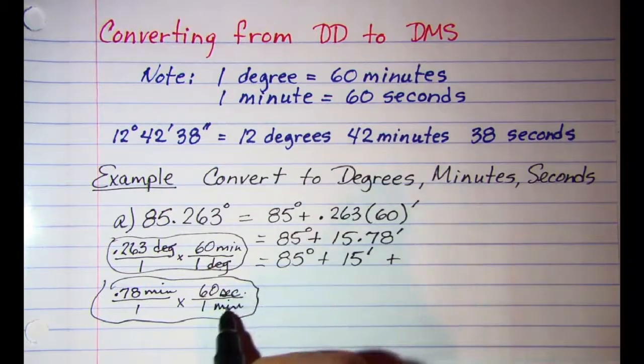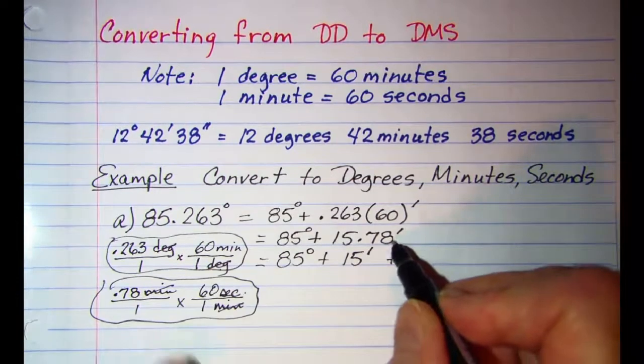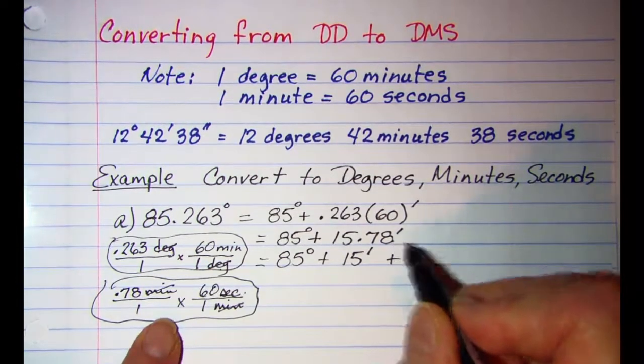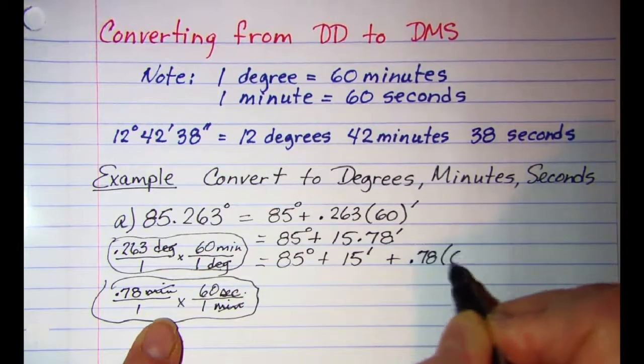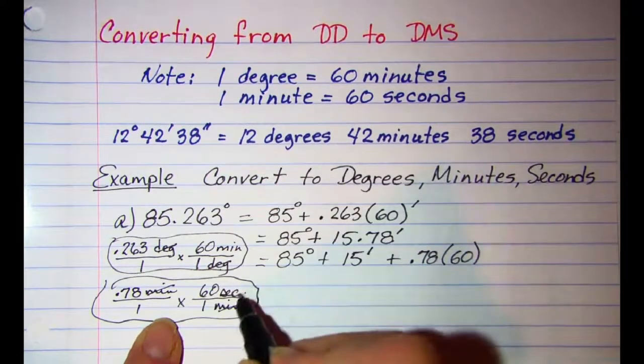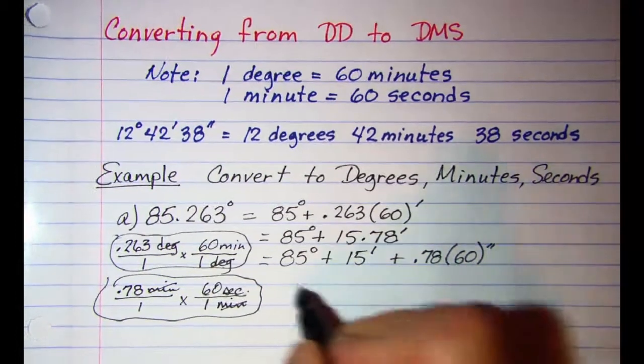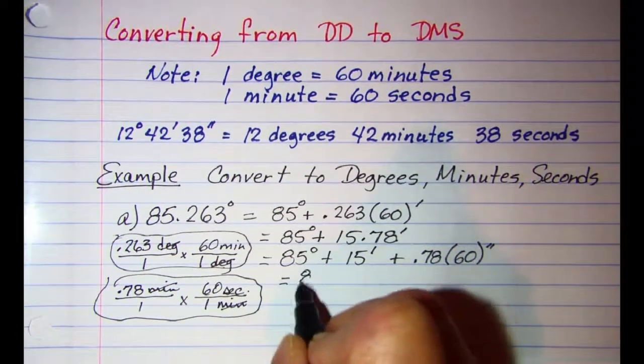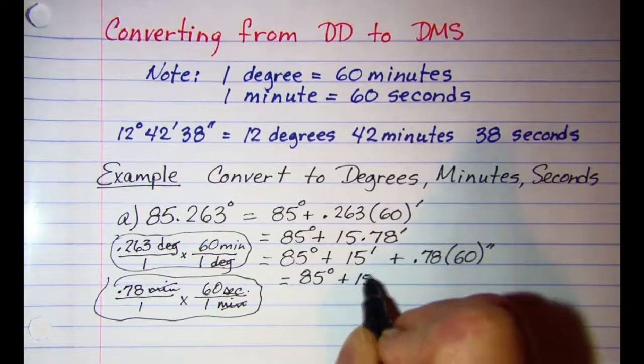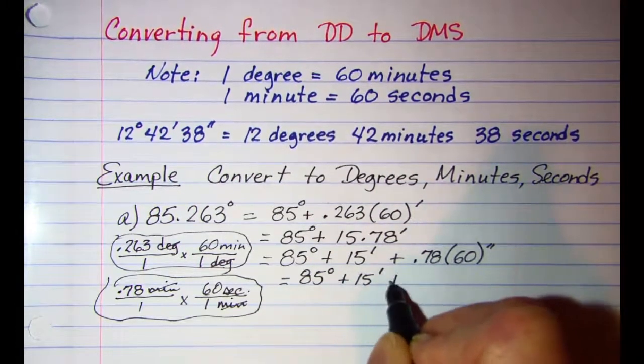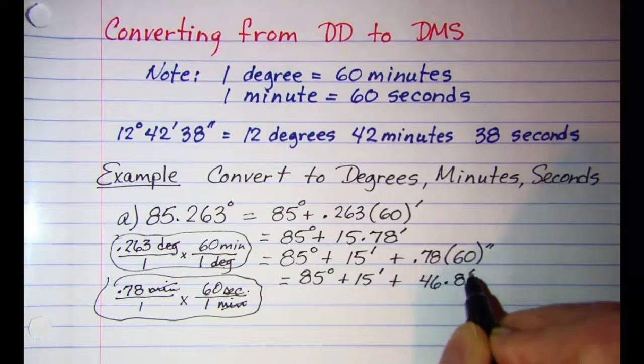I can cancel my minutes off, and so this 0.78 times 60, that will now be in seconds. So if I do this multiplication, I have 85 degrees, 15 minutes, 46.8 seconds.